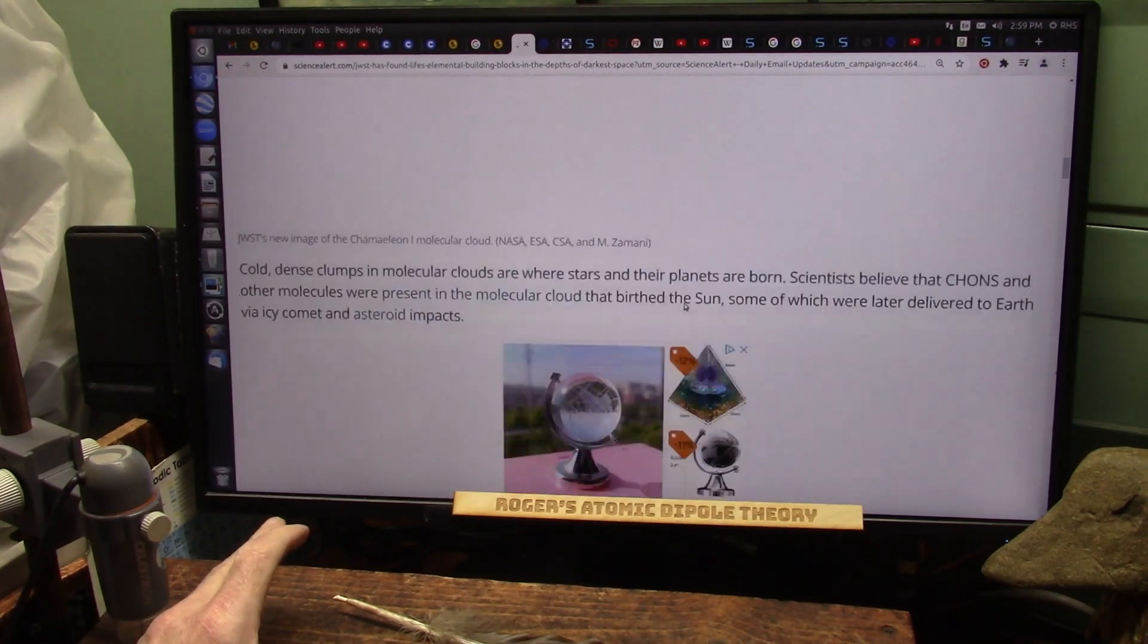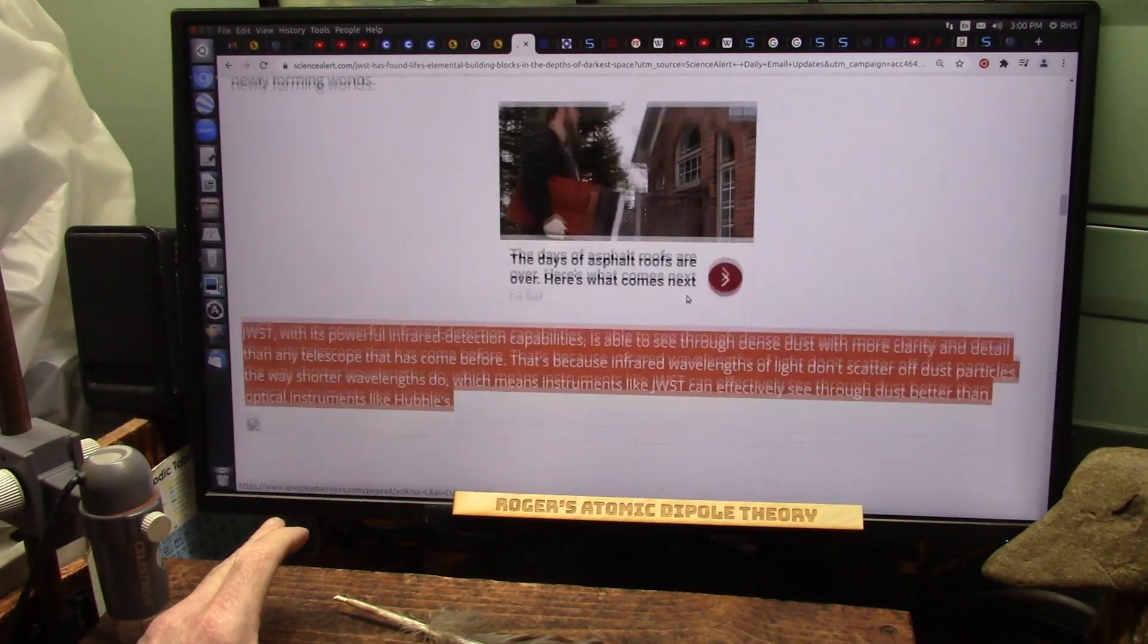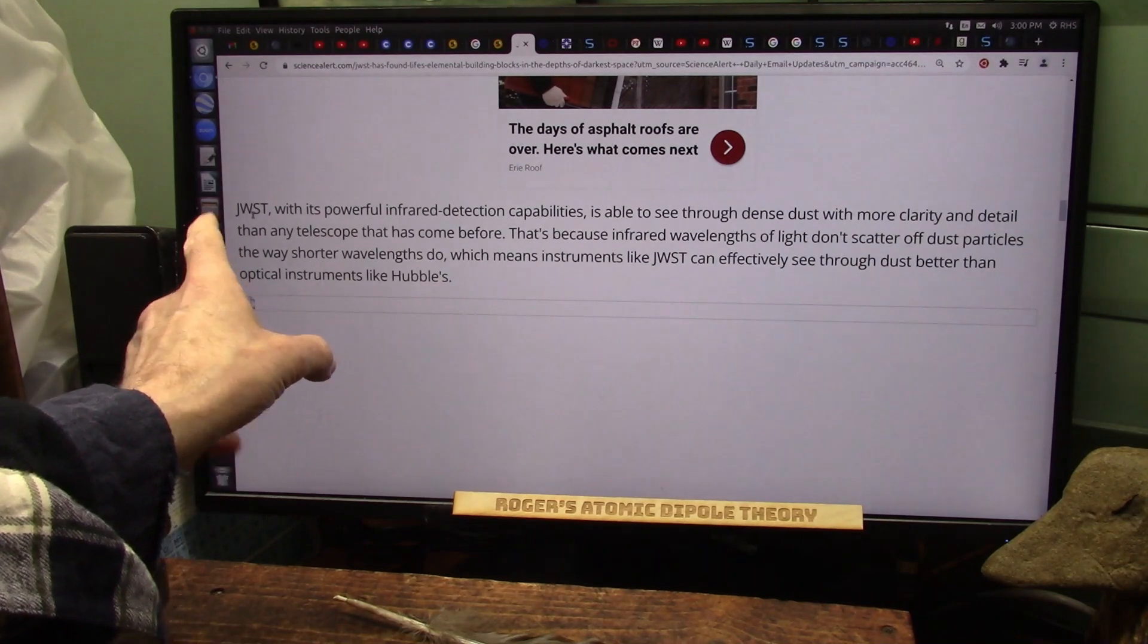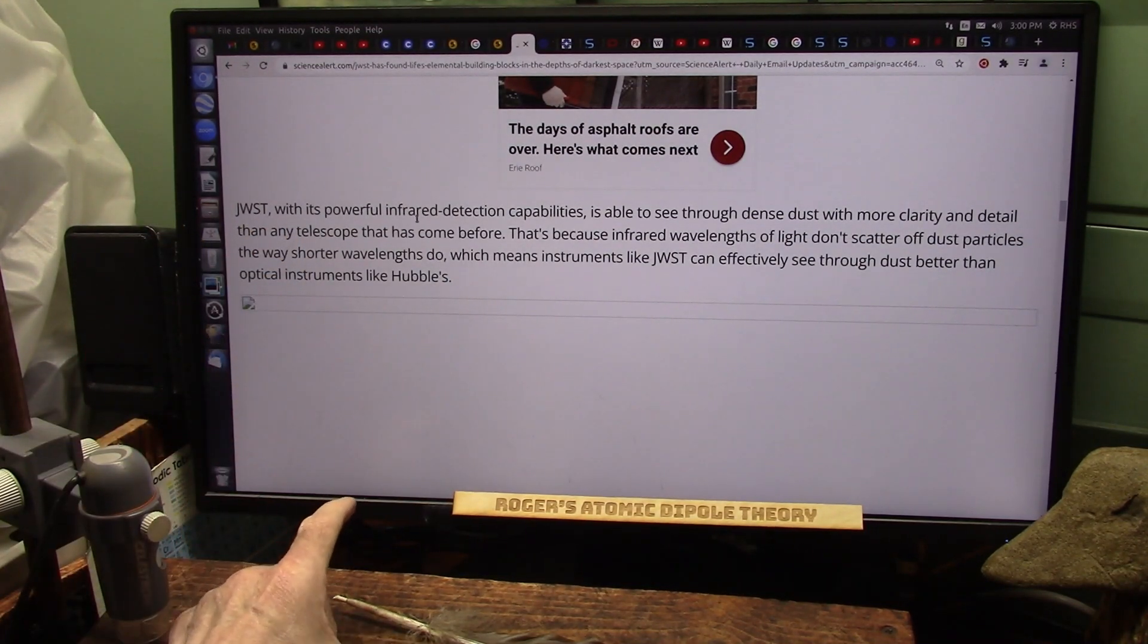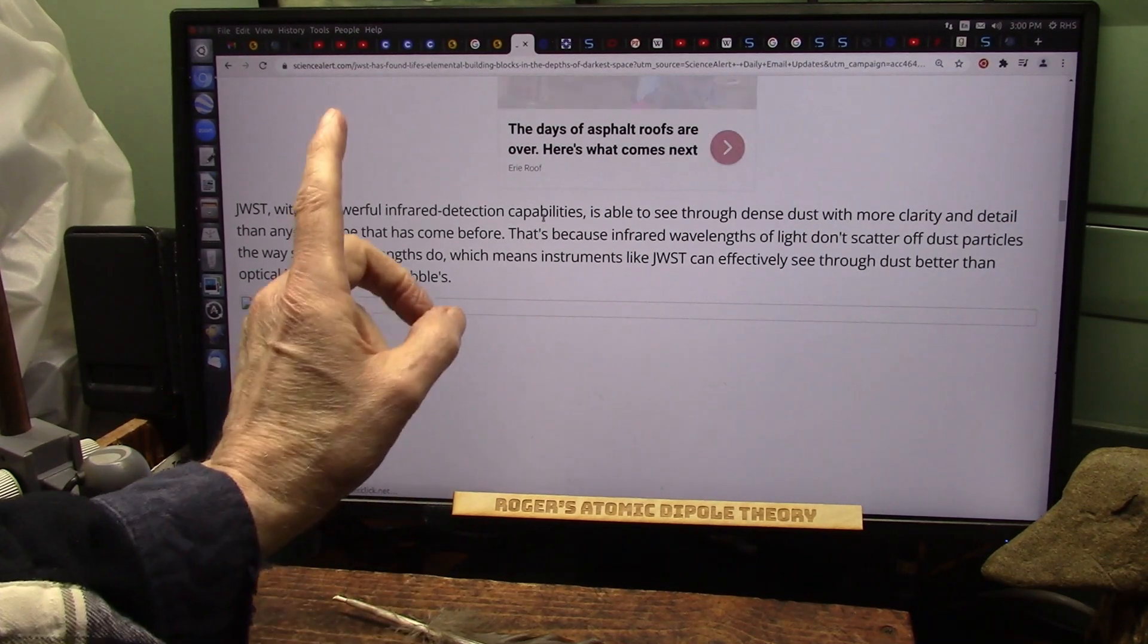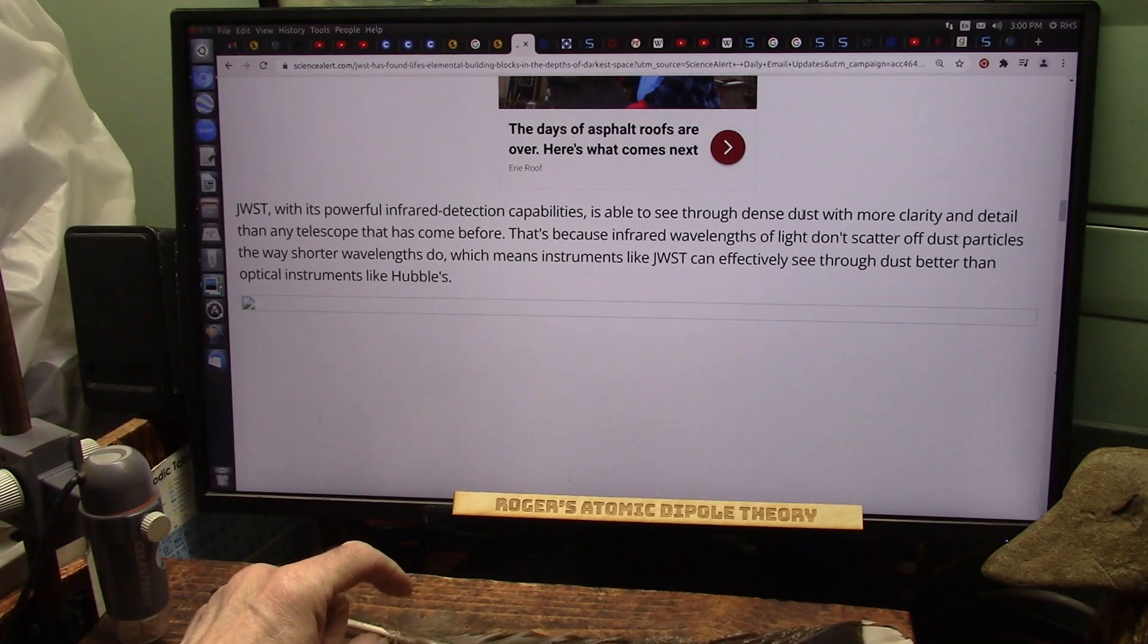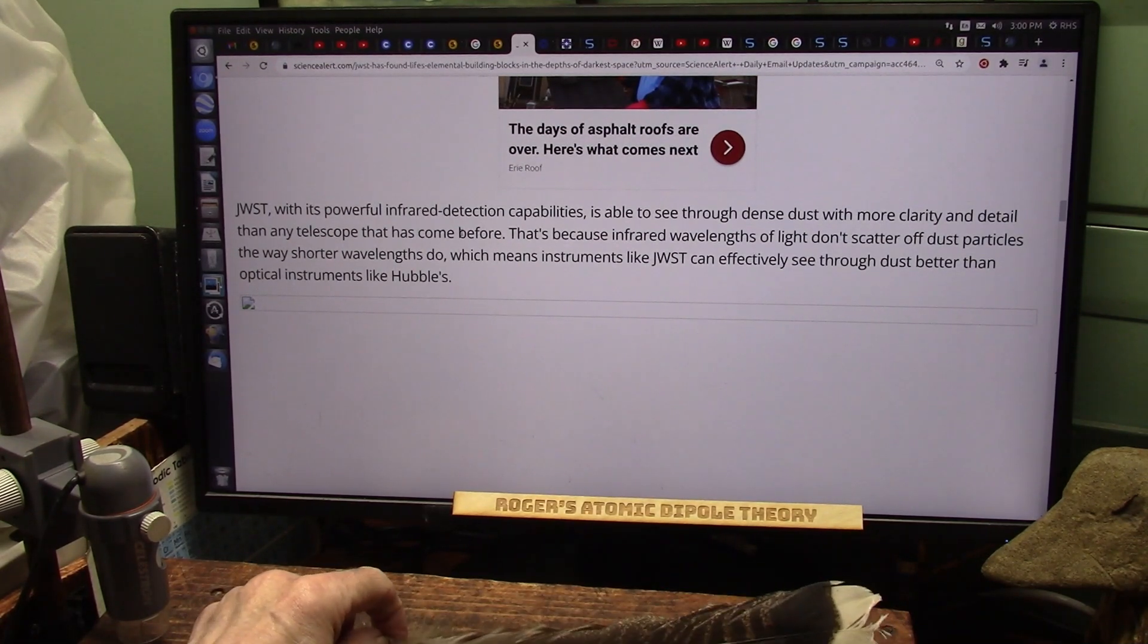Space is saturated with particles. There is no empty space. This Webb Telescope, with its powerful infrared detection capabilities, is able to see through dense dust with more clarity and detail than any telescope that has come before.